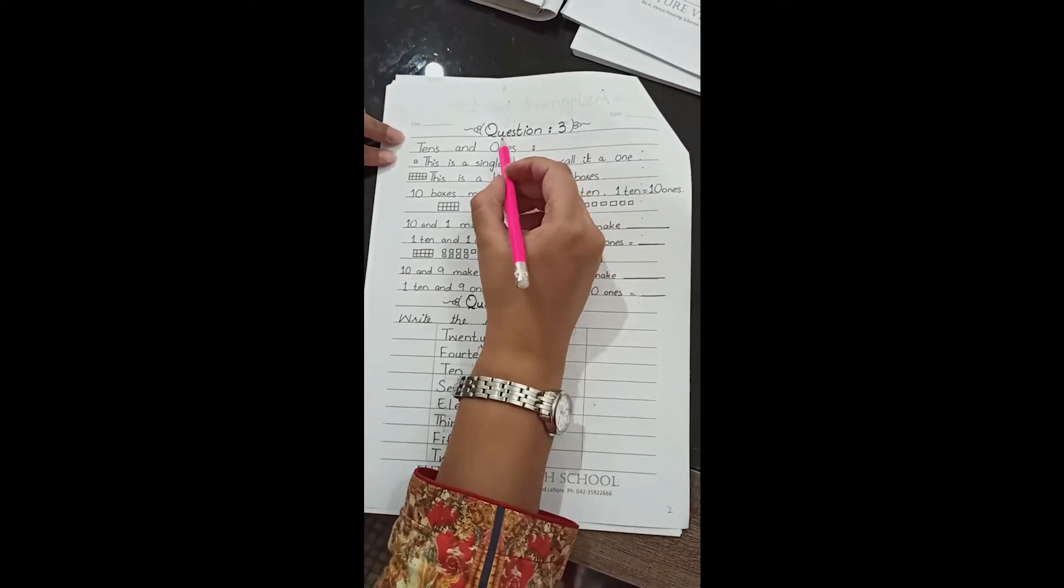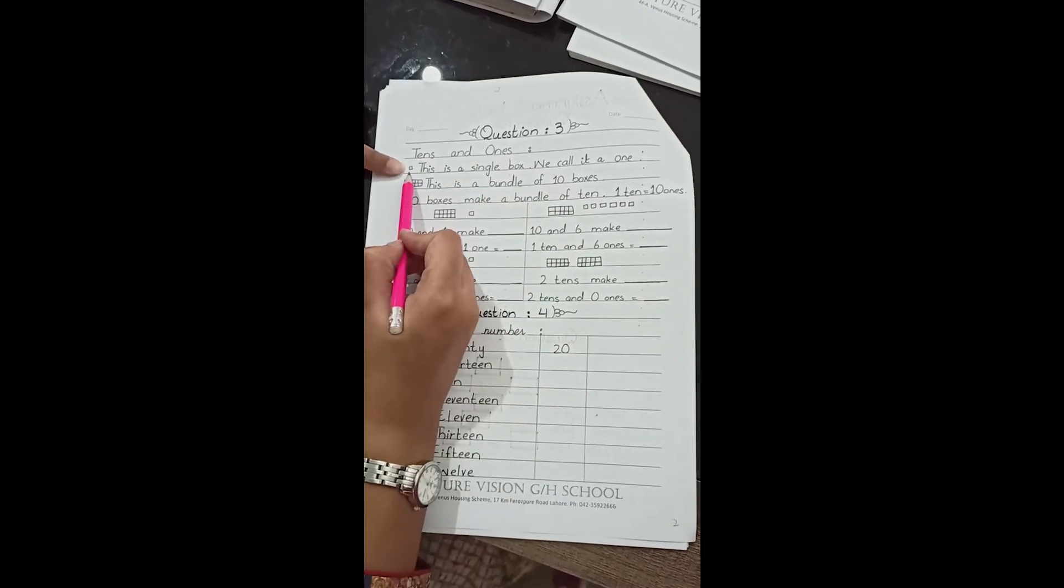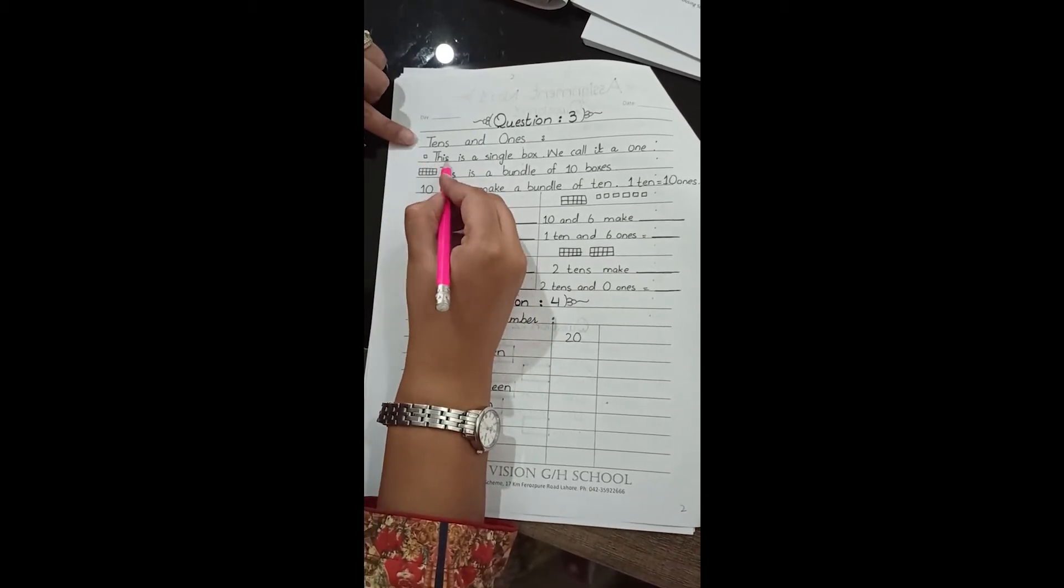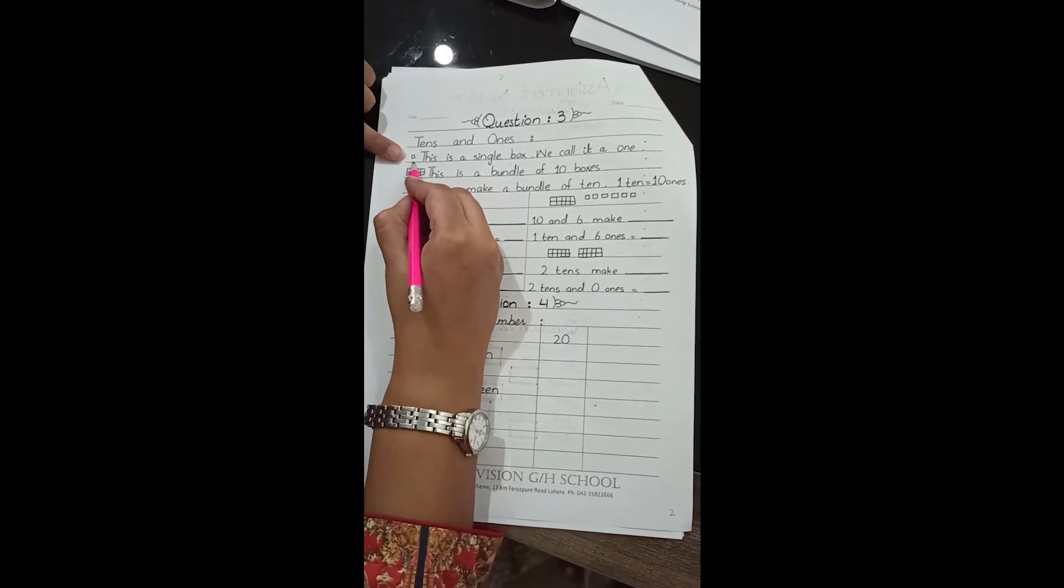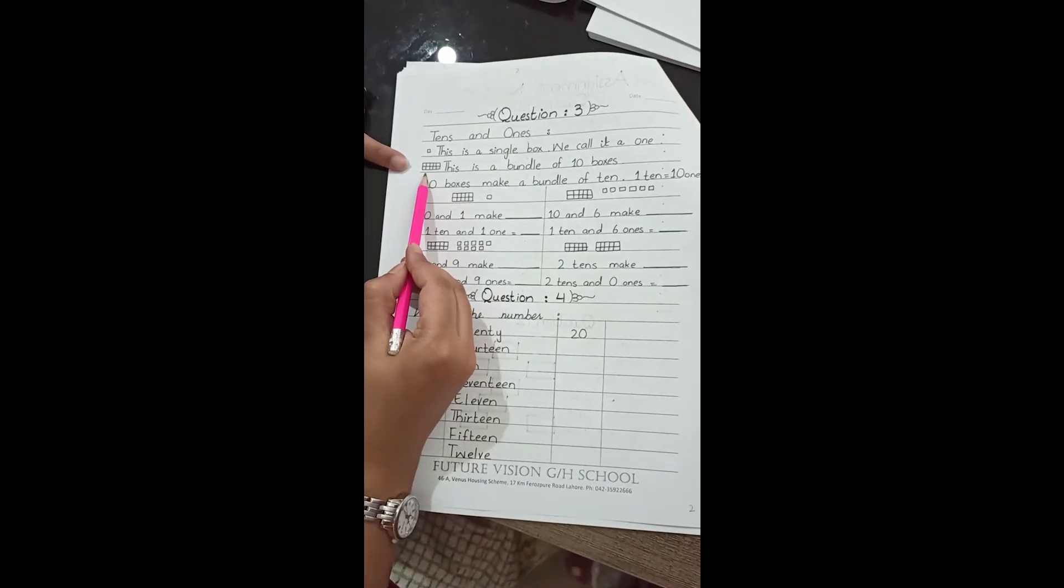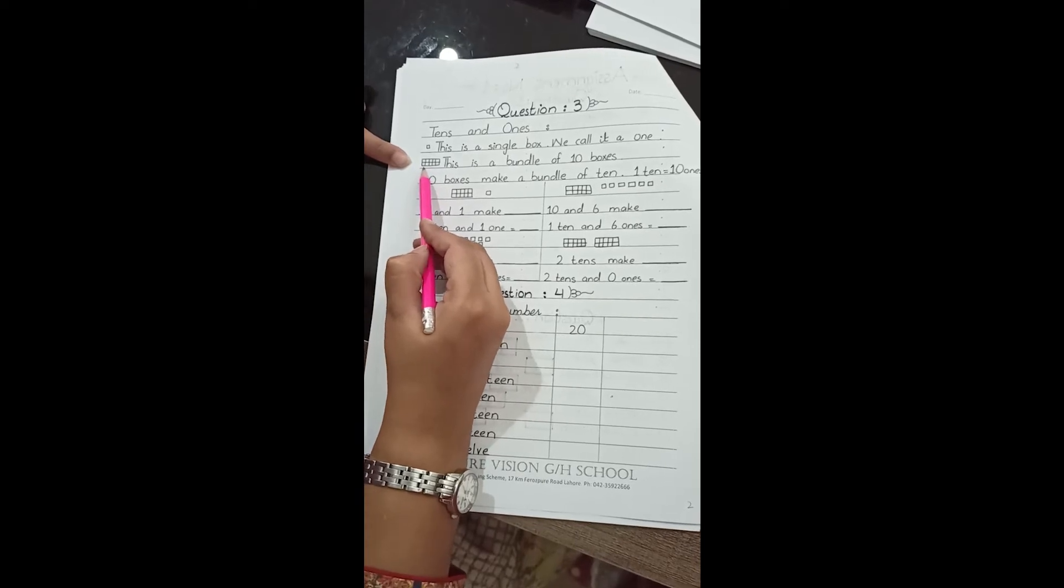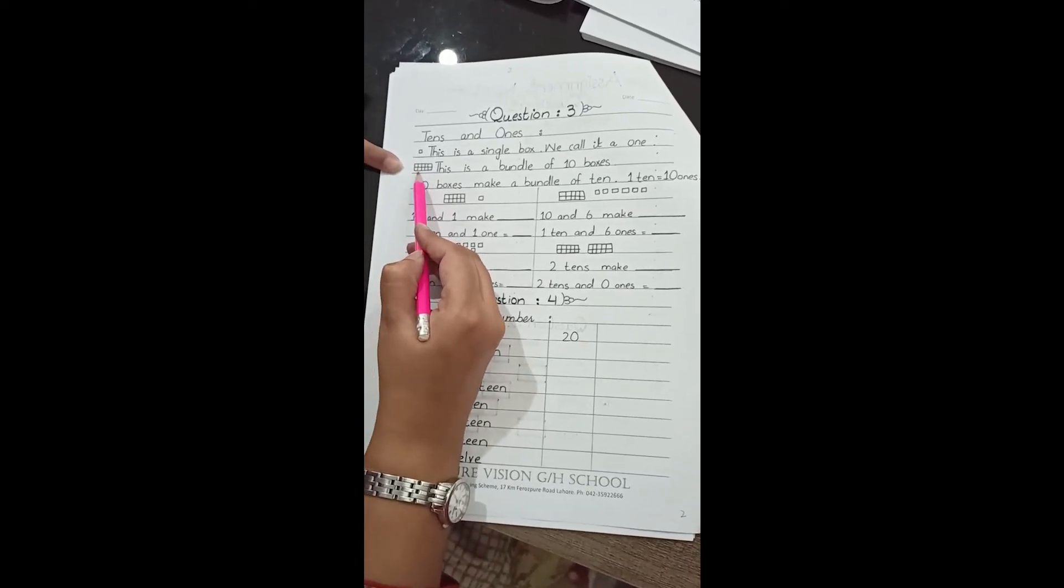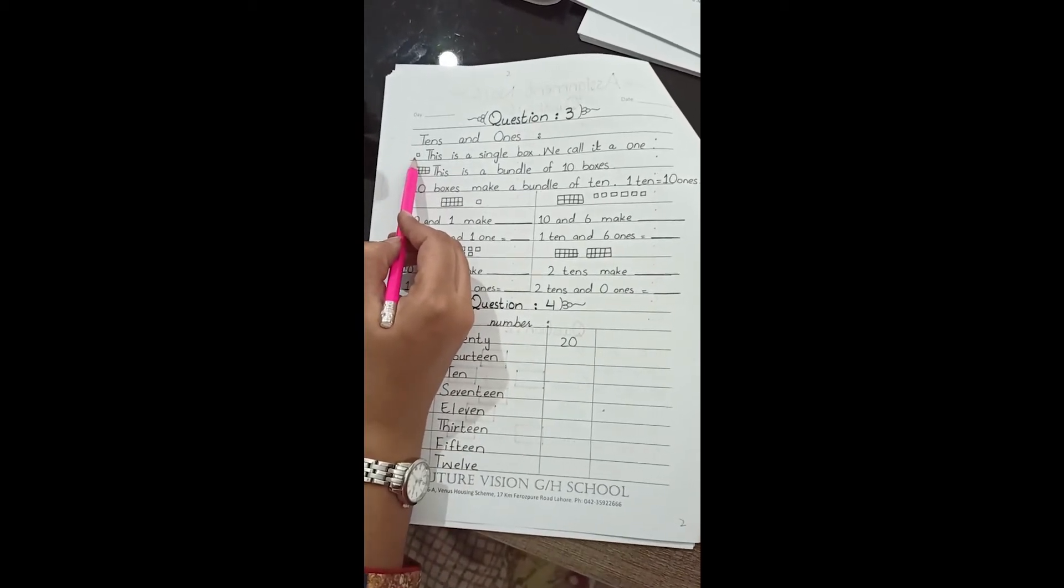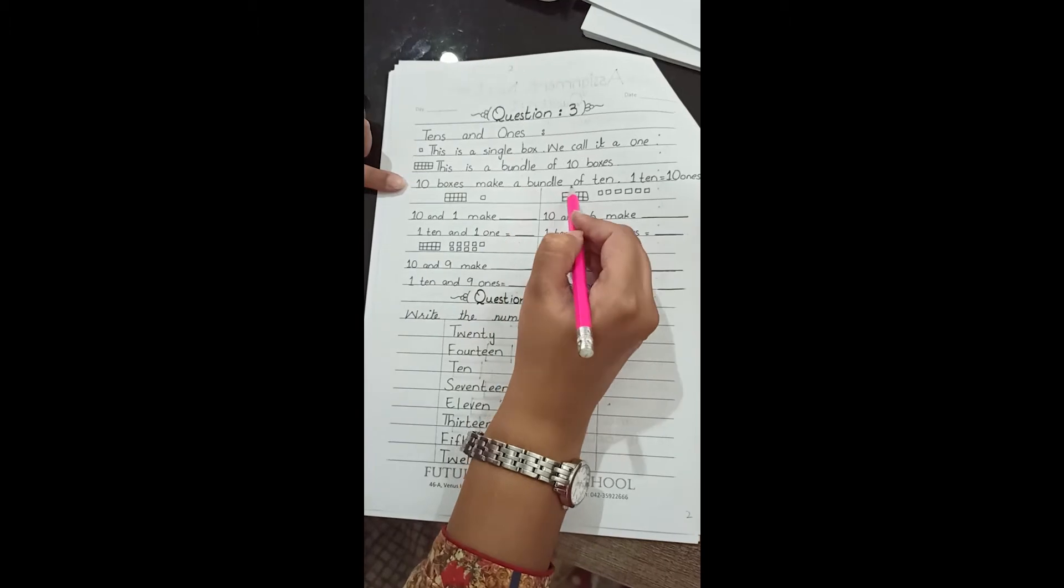Now question number 3: tens and ones. This block represents 1. This is a single box. This is a bundle of 10. There are 10 boxes in this bundle and this is equivalent to 10. 10 boxes make a bundle of 10.